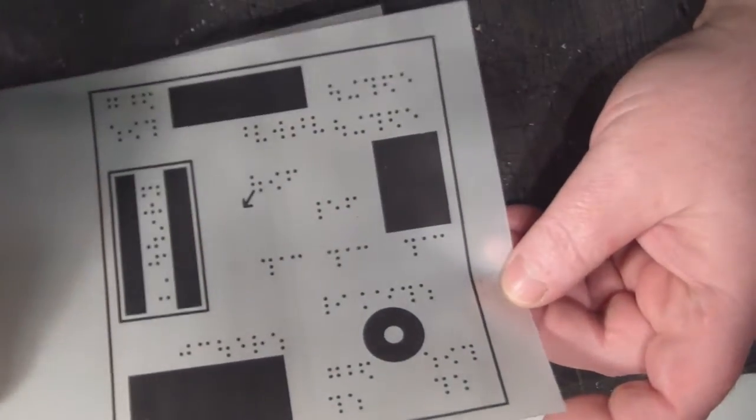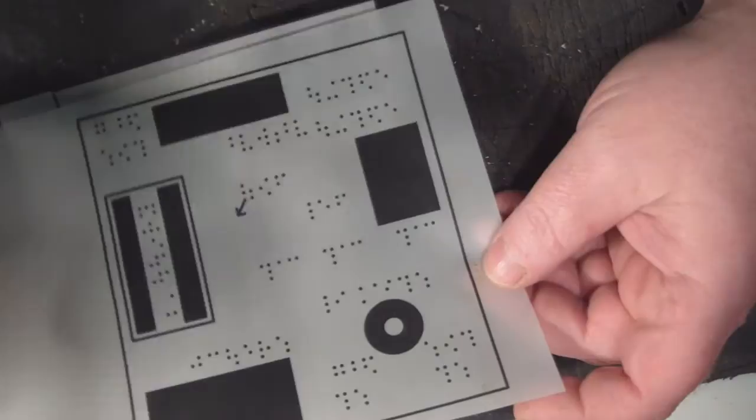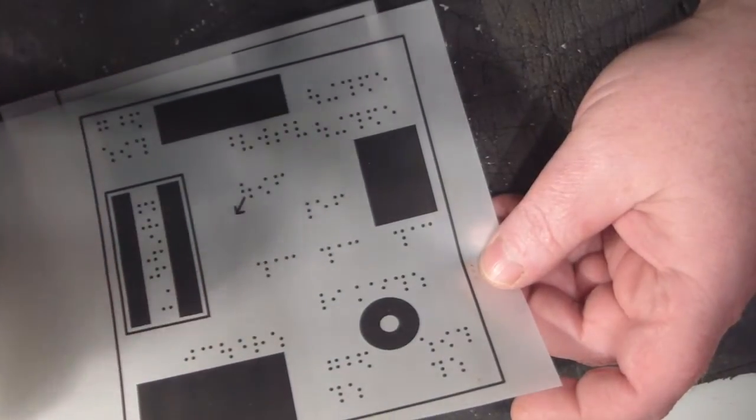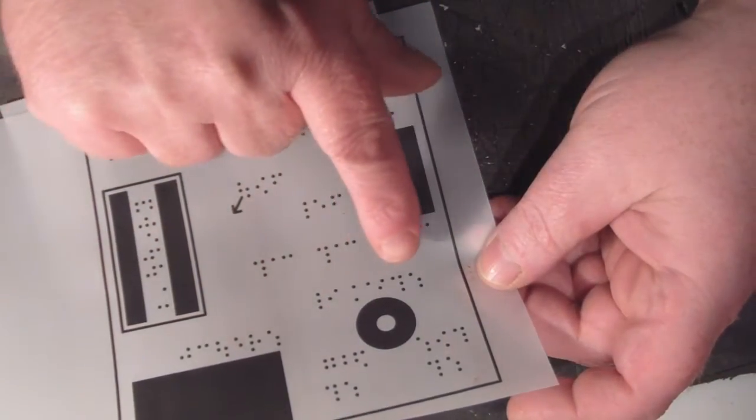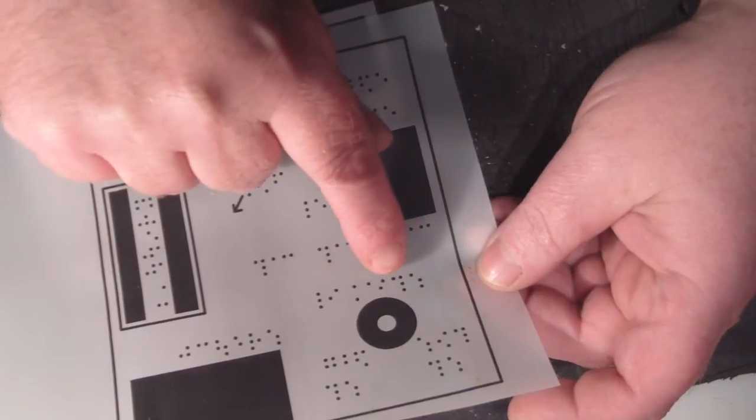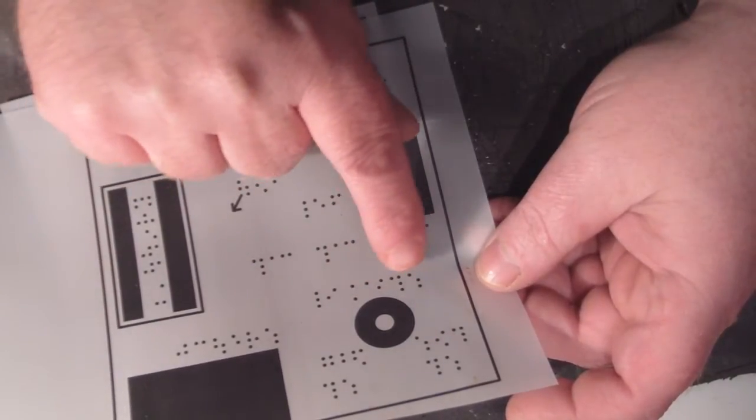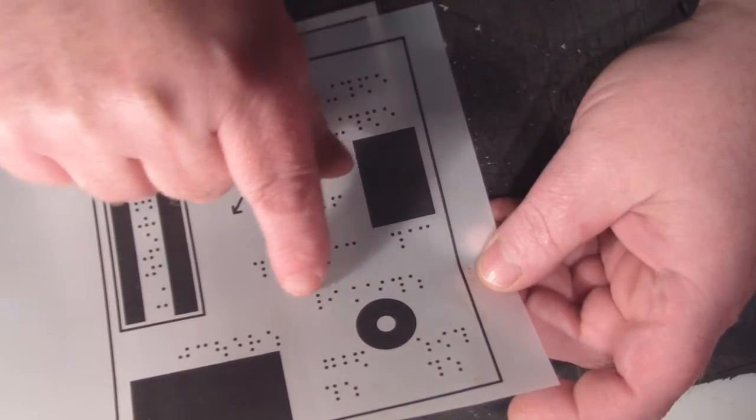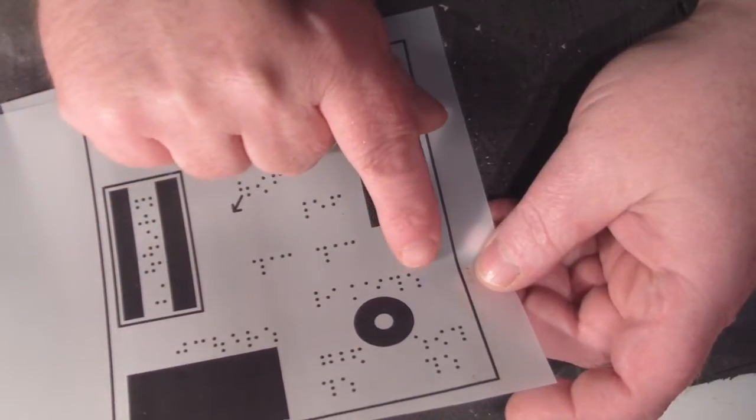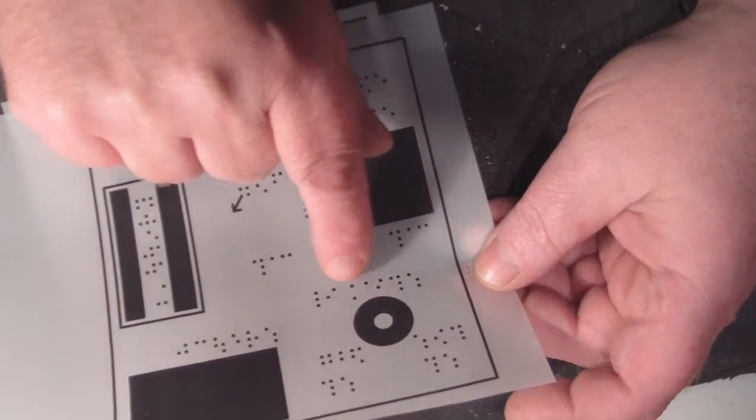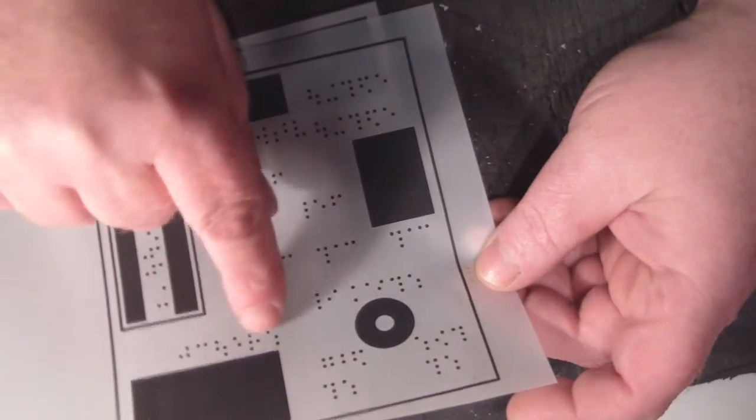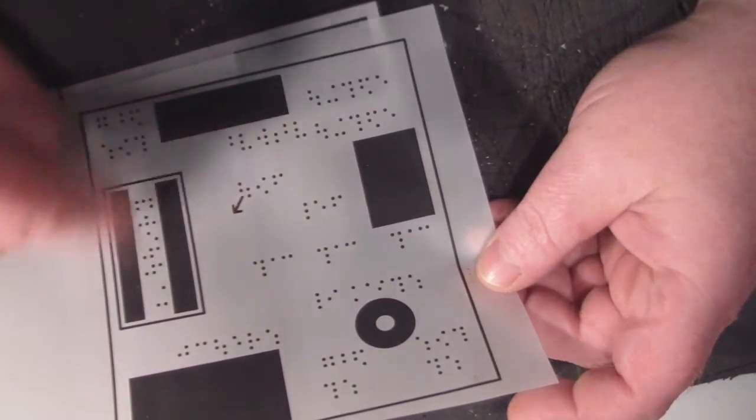I thought we could do it by putting little tiny solder pads and then developing this board and etching the copper off to leave these little solder pads here that are marked out in Braille for the different components.